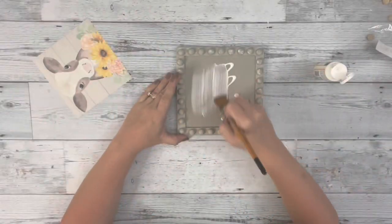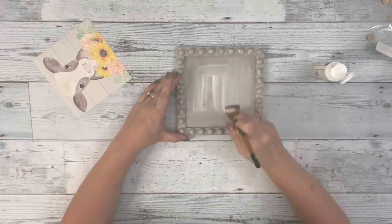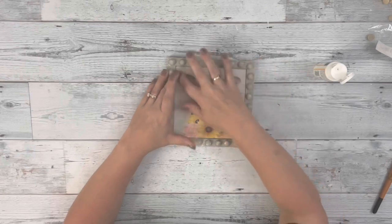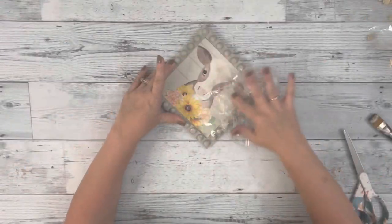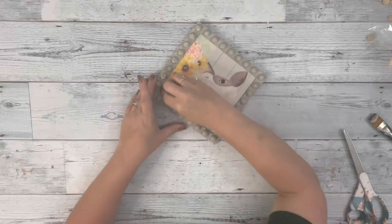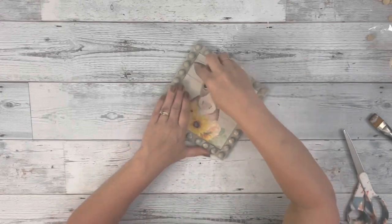Then I added a layer of Mod Podge on the inside of my little frame and placed down my printable, which I will add to my Facebook group that I'll have linked in the description. Then I used some plastic wrap or saran wrap to smooth out any bubbles or wrinkles.